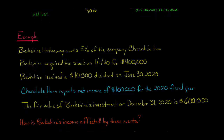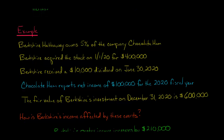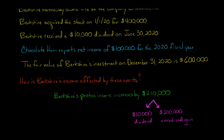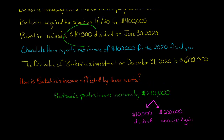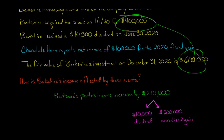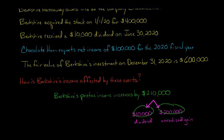First, we determine which method to apply. Since Berkshire owns 5% of the company, we use the fair value method. That means unrealized gains or losses and dividends are both going to affect Berkshire's profit. Their pre-tax income is going to increase by $210,000: $10,000 of dividend revenue plus a $200,000 unrealized gain. They bought the stock for $400,000, and at year-end it's worth $600,000, so the $200,000 difference is an unrealized gain. $200,000 plus $10,000 equals $210,000 increase in pre-tax income.